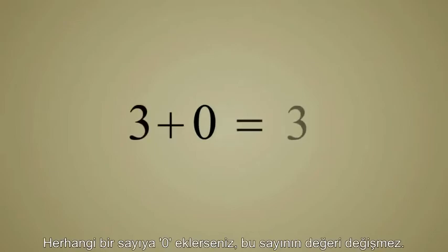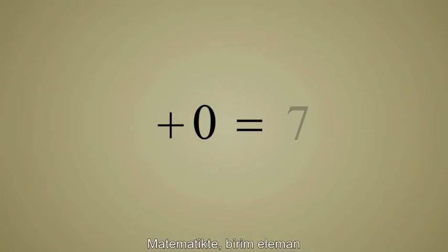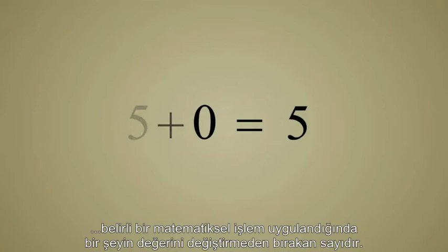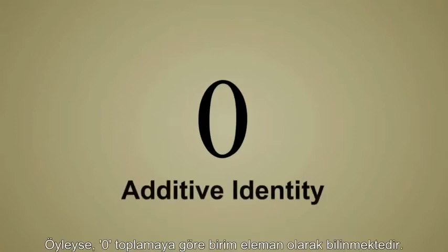Zero is a number with a unique property. When you add zero to any number, the value of that number is unchanged. In mathematics, an identity element is a number that leaves the value of something unchanged when a particular mathematical operation is performed. So zero is known as the additive identity.